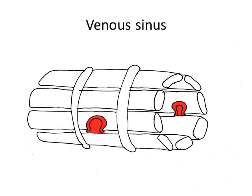Zooming into a venous sinus, we see that this endothelium has openings or fenestrations — it's not a continuous endothelium unlike in other blood vessels. There are some annular rings that keep the endothelium from drifting apart because of all these openings. Red blood cells desperately squeeze themselves through these openings to escape the macrophages on the outside of the venous sinus. Those that are not able to get in get stuck, and the macrophage will come and gobble them up, ending their life.